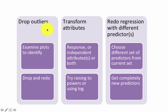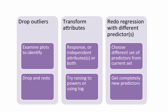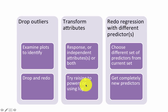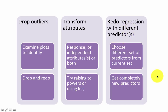Some things we could do: examine the plots to identify outliers, drop those outliers, and redo the model. If you find a trend in the fitted versus residuals chart, you may transform the attributes — for example, use the log of the attribute, or raise the attribute to some power — and then redo the linear regression on the transformed value. Or you may have to redo the regression with different predictors, gather more data, or use different predictors entirely.